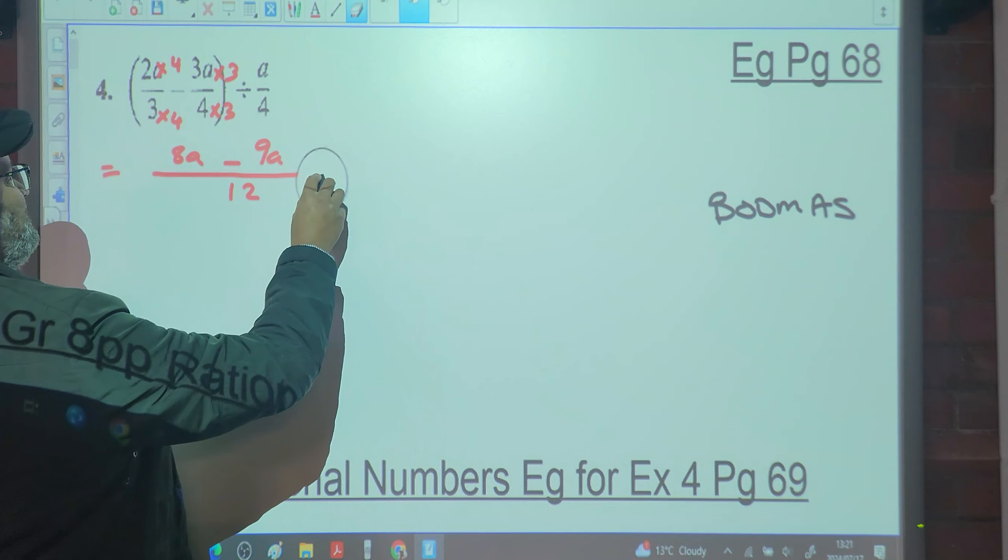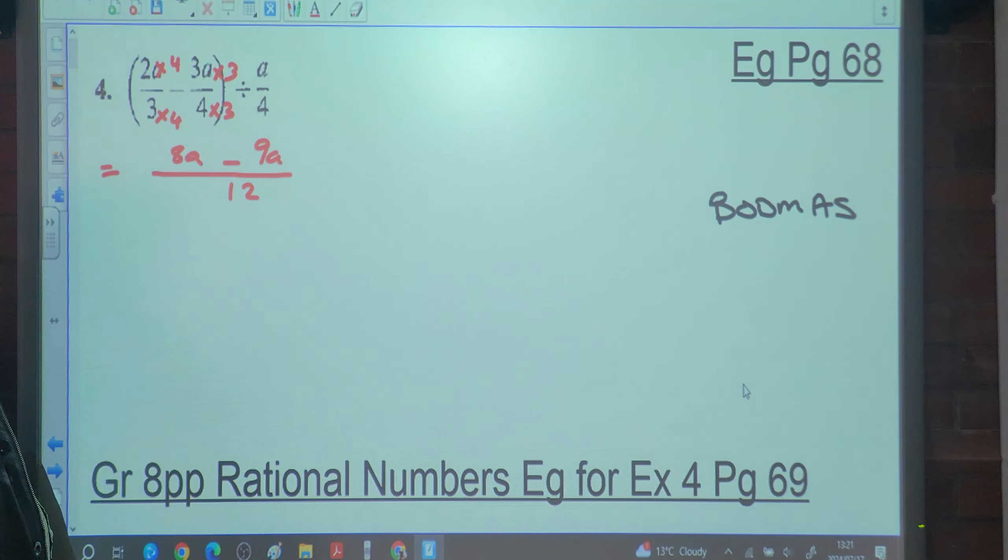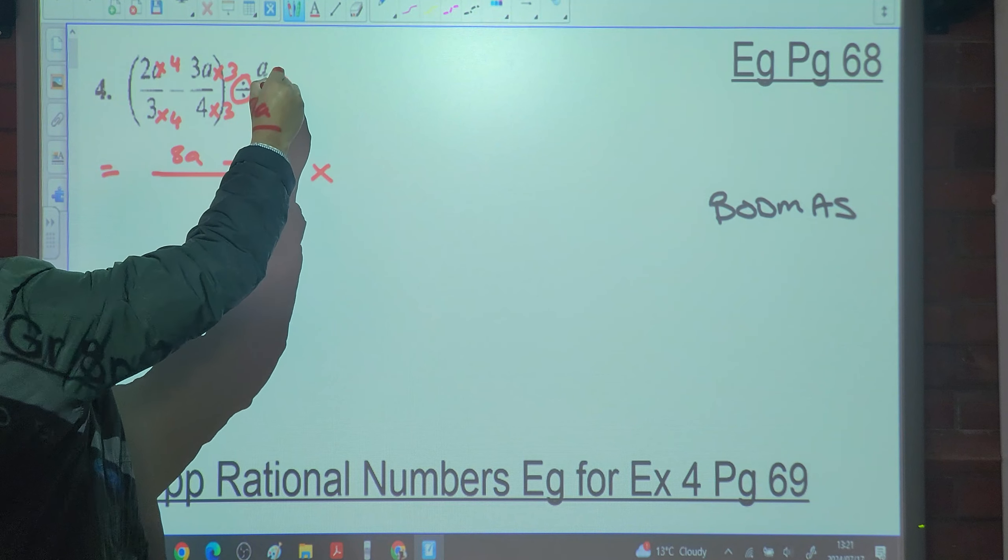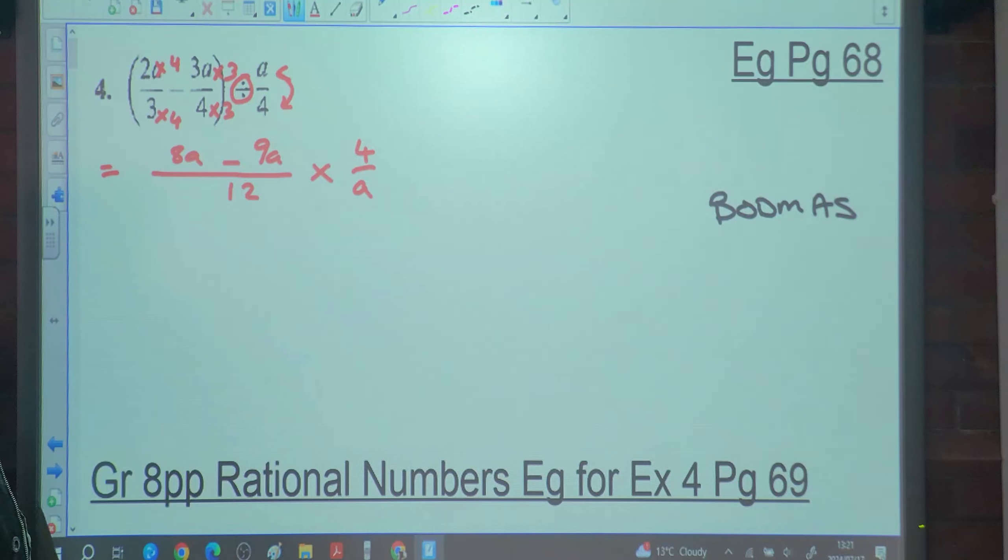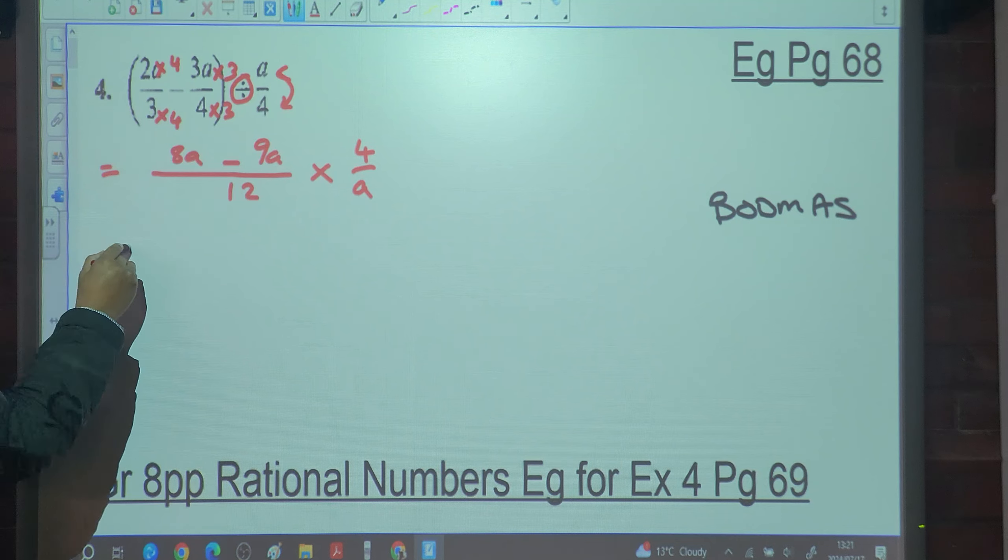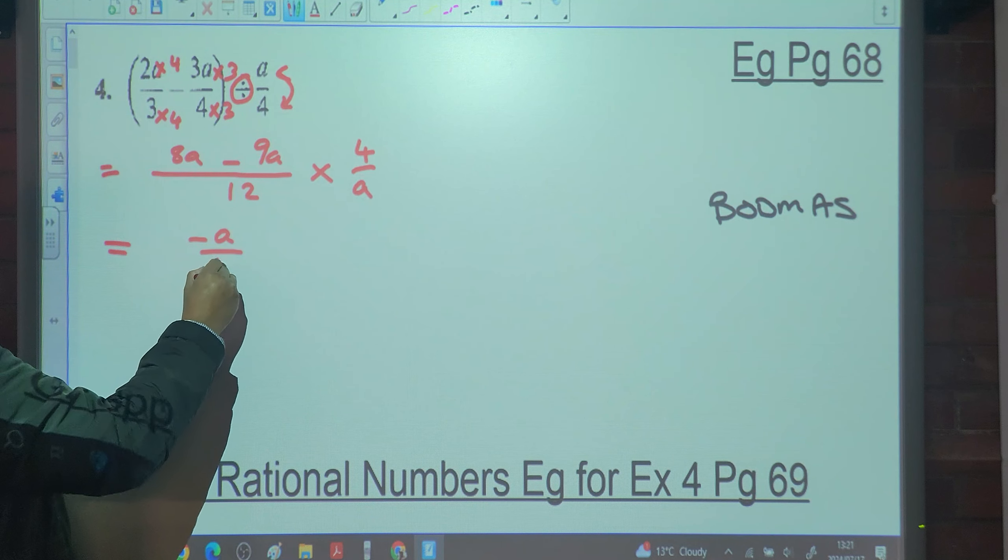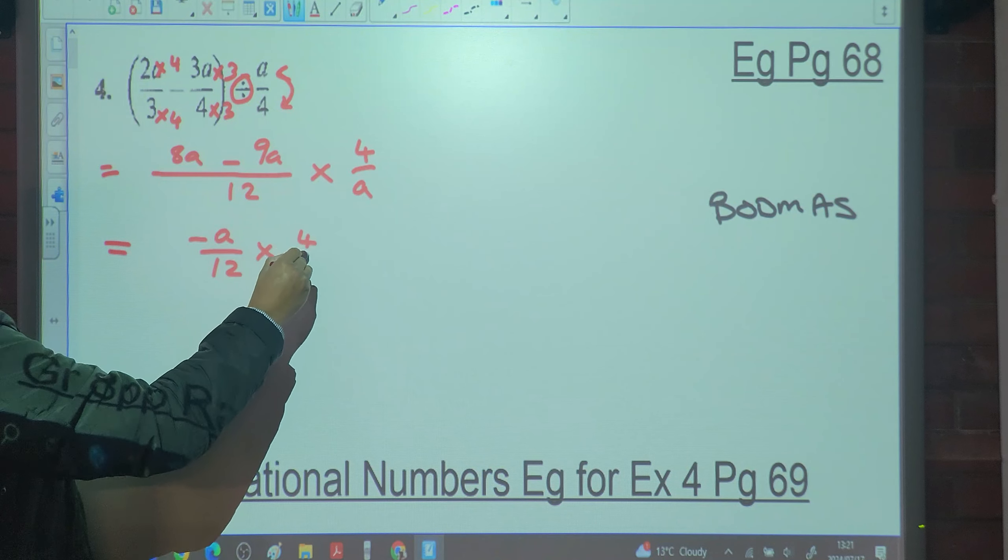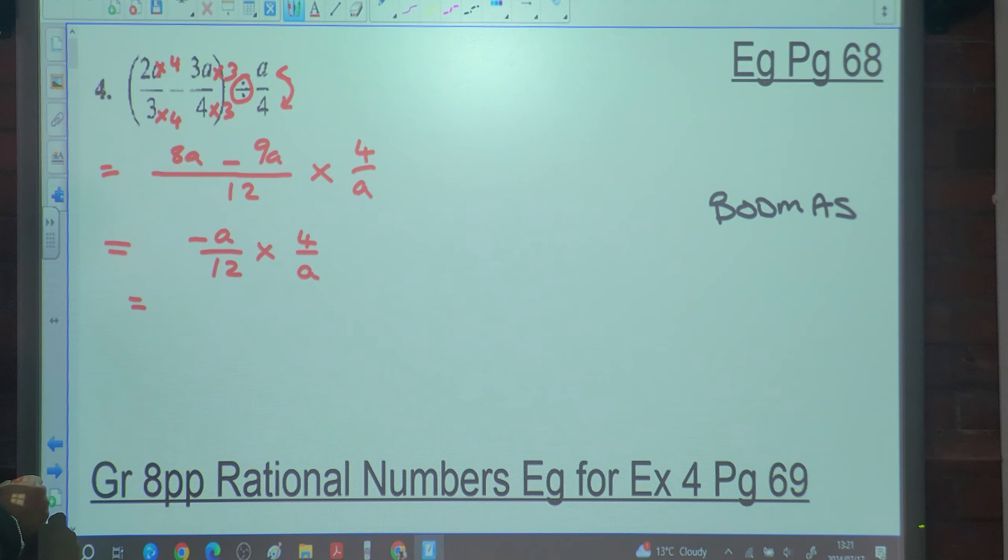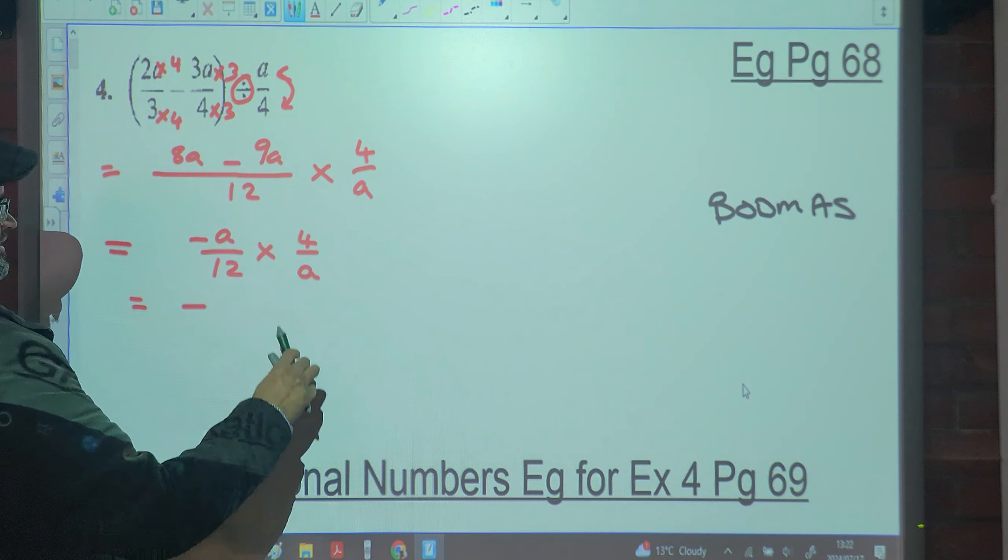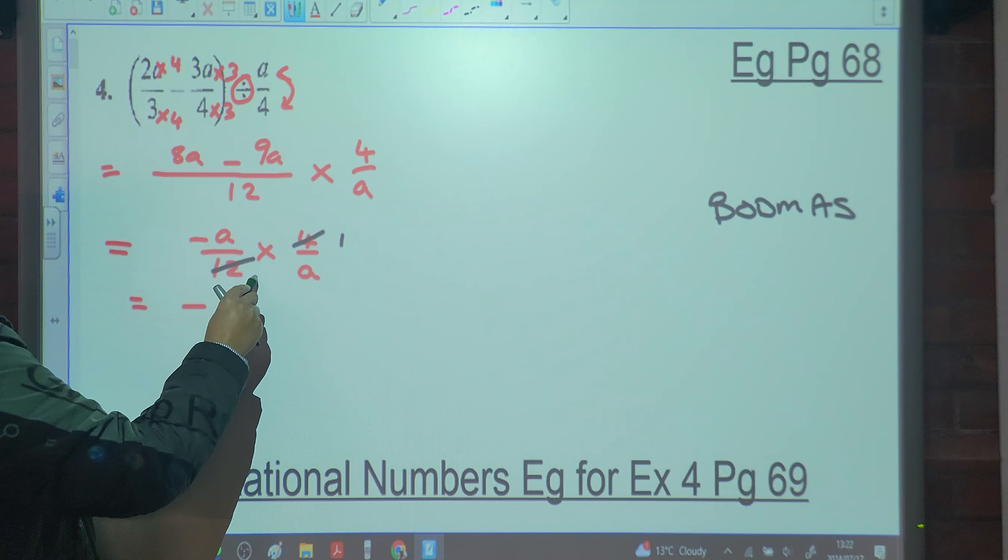And I'm going to change this to multiplication. Tumble and the times. What is eight A minus nine A? Negative A over 12 multiplied by four over six. Now what? Cancel. Negative times positive is negative. Four going into four once, four going into 12 three times. And the A's will cancel as well.